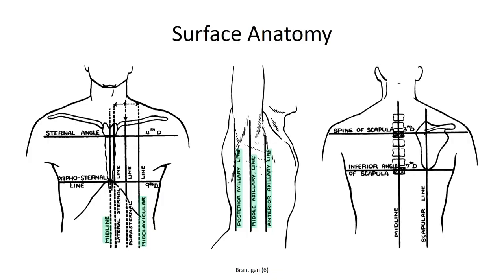On the posterior surface, the scapular lines align with the inferior angles of the scapula, and the posterior median or mid-vertebral line is defined by the intersection of the mid-sagittal plane with the vertebral spinous processes.